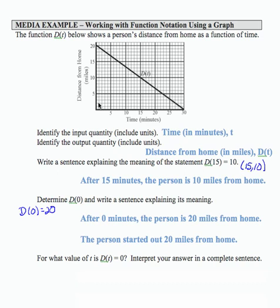So if I want to indicate the time, that would be d of time of 30 equals 0, also equivalent to the ordered pair 30 comma 0. But if I want to write that as a sentence to interpret our meaning there, then that's going to be after 30 minutes, that's my input, the person is 0 miles from home. And there it is on our graph.